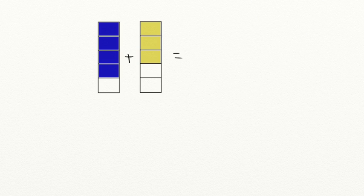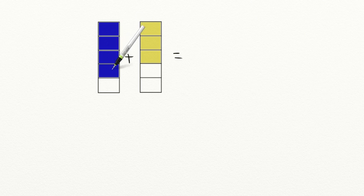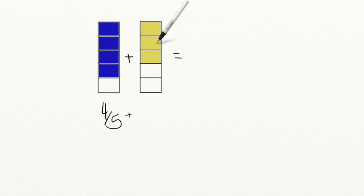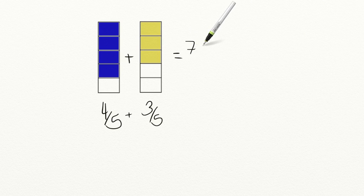Let's go ahead and practice a few problems together. I have a diagram on the screen with two fraction bars. I want you to add the two numbers and write it as a fraction. We have five parts in the whole, so we're going to be adding fifths: one-fifth, two-fifths, three-fifths, four-fifths. We're going to add four-fifths plus three-fifths. Since our denominators are the same, we add our numerators: four plus three equals seven, and our denominator stays as five. So we have seven-fifths.